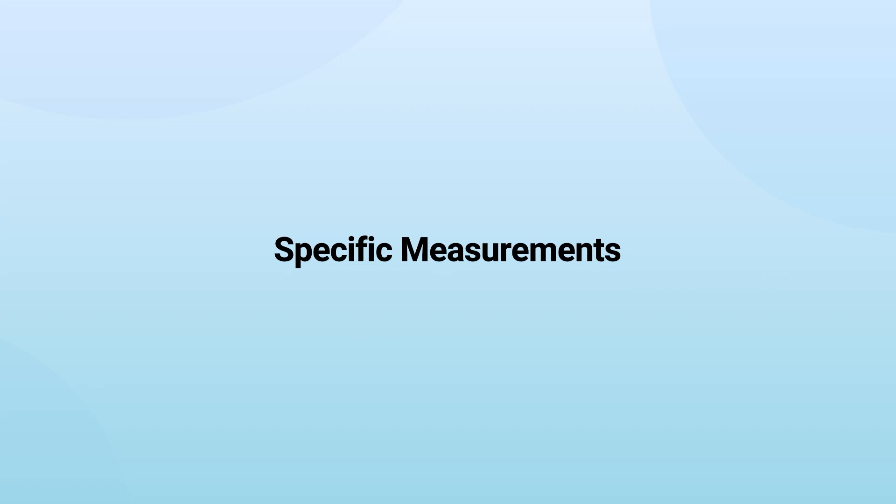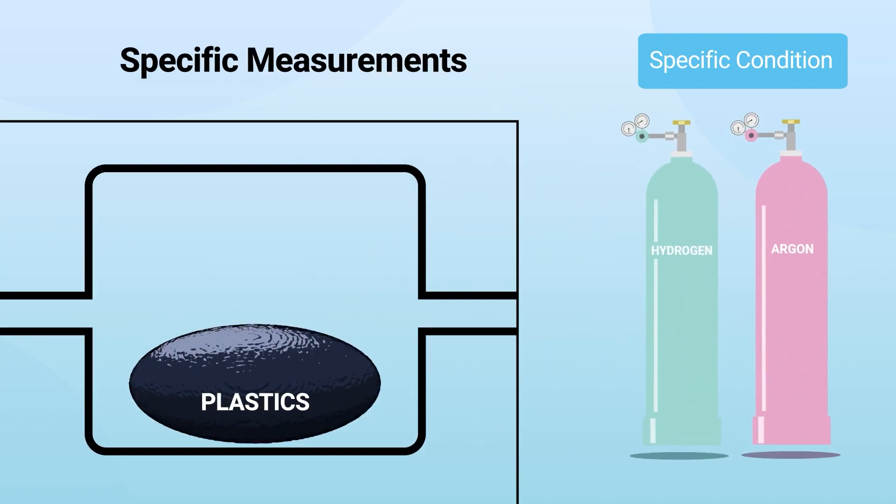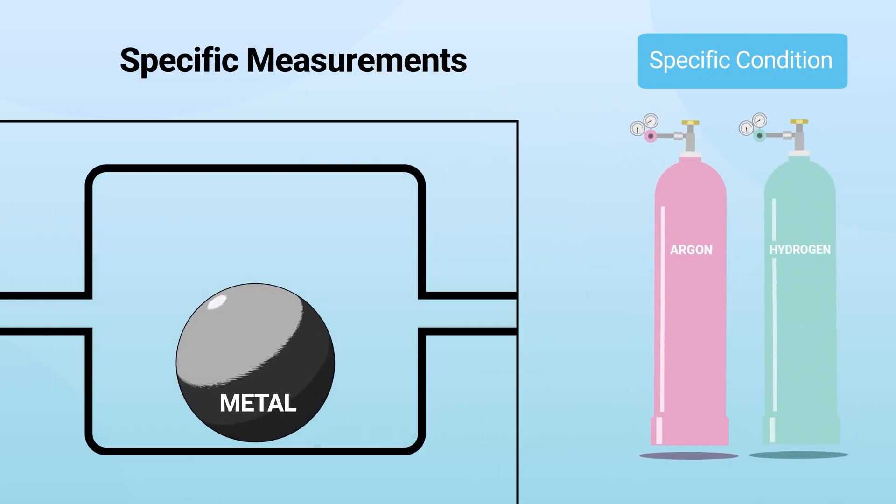For specific measurements where only certain gases can be used to achieve a specific condition, gases such as hydrogen or argon can be ideal choices due to their specific chemical properties.